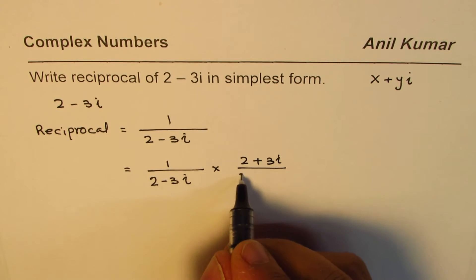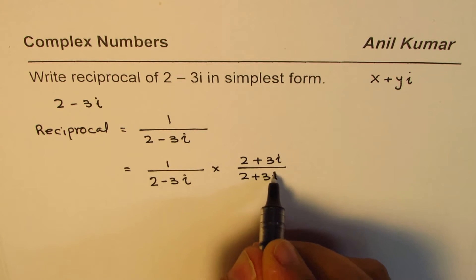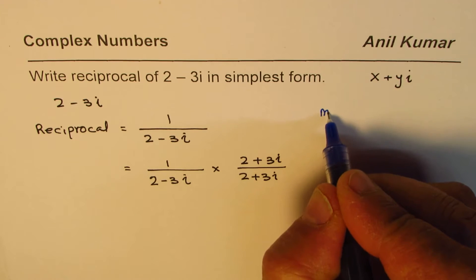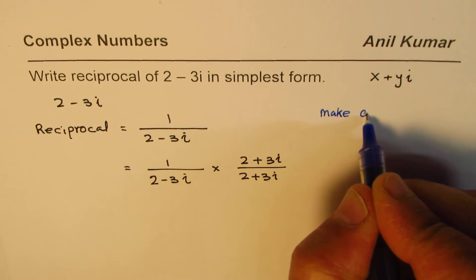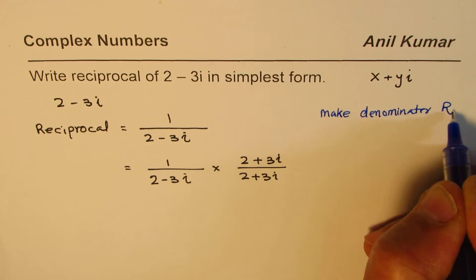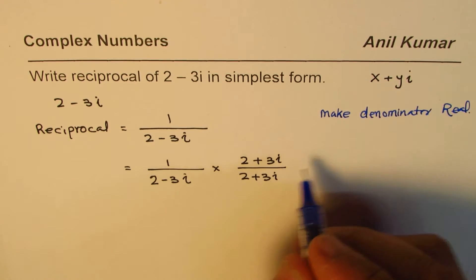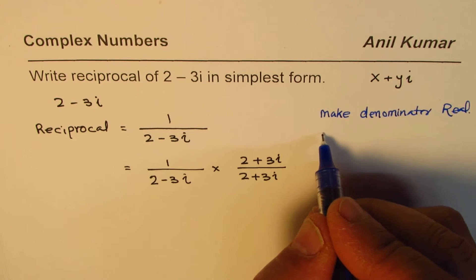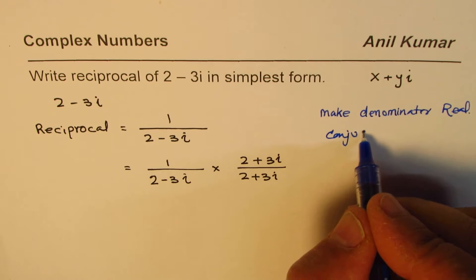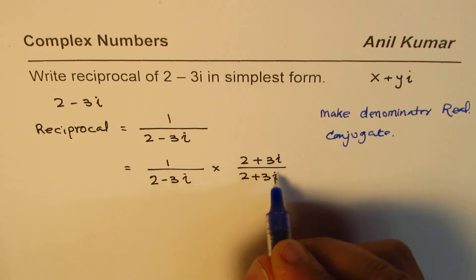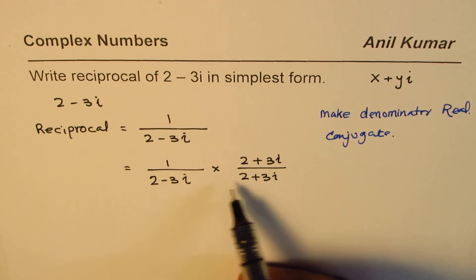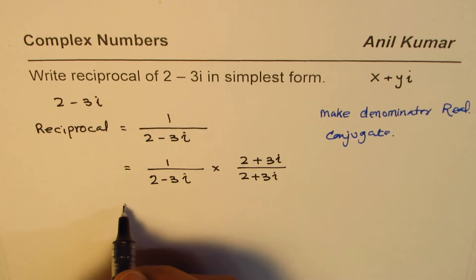The step here involves making the denominator real. How do we do it? We do it by multiplying and dividing by the conjugate. We take the conjugate of the number and multiply and divide by that. This is the same numerator and denominator, like times 1, so it does not really change the number.